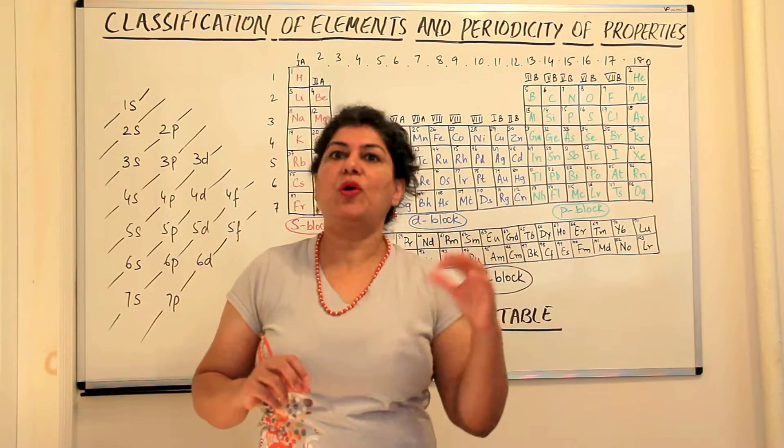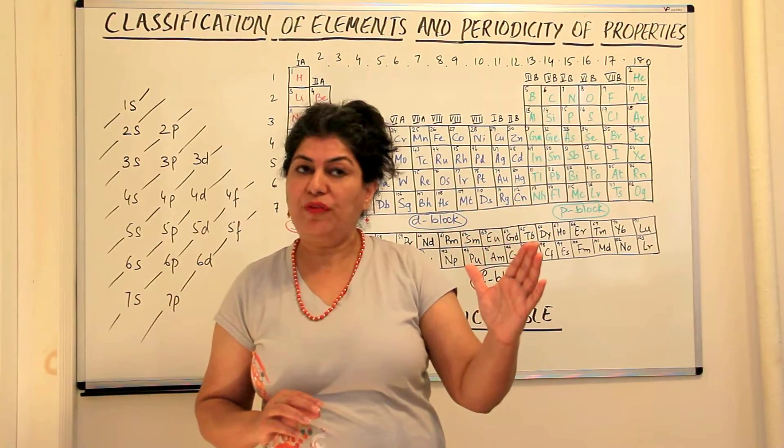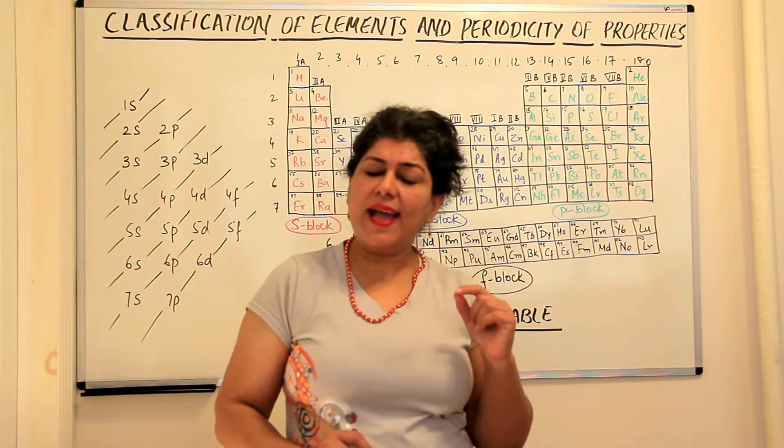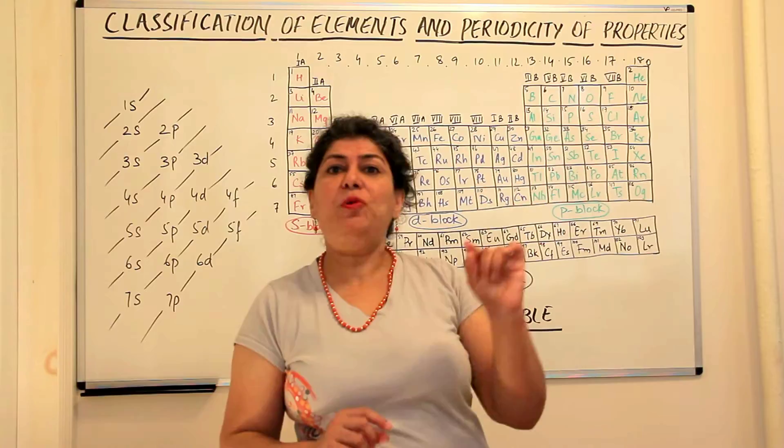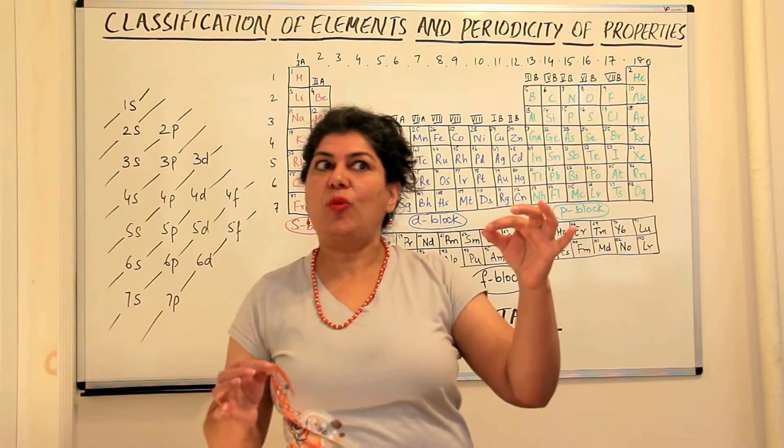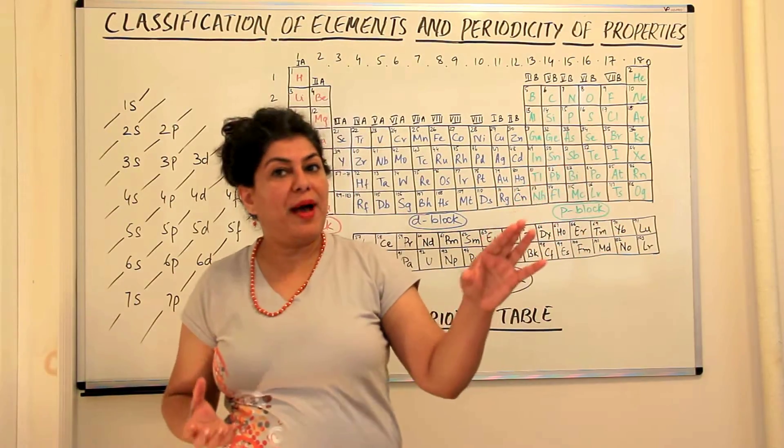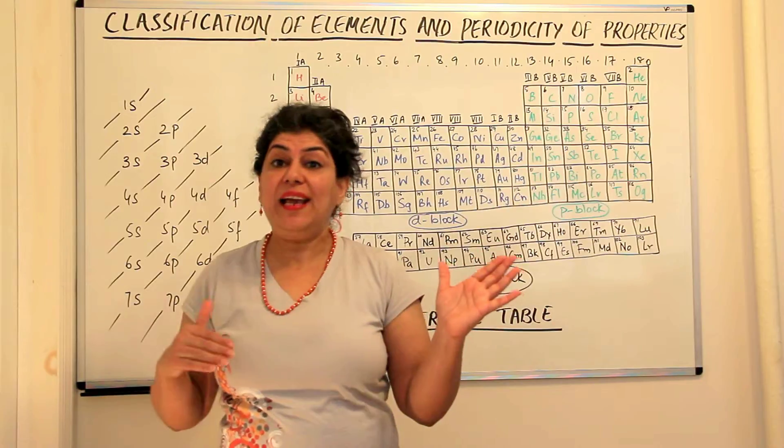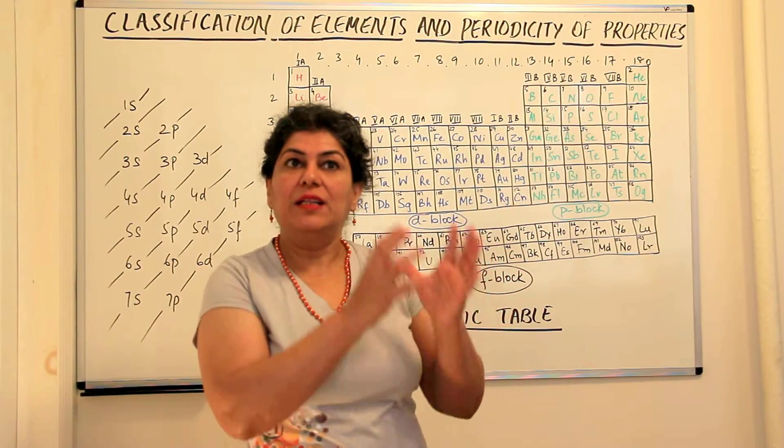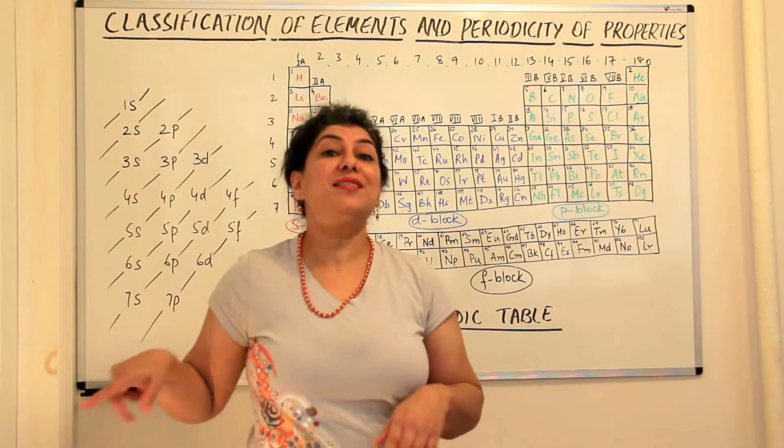At the same time he also plotted another graph between the under root of the frequency and the atomic numbers and he found that when you plot a graph between the under root of the frequency and atomic number he gets a straight line, but when he does so with atomic mass he does not get a straight line. This means that the spectrographs obtained are directly related to the atomic number and not the mass number.